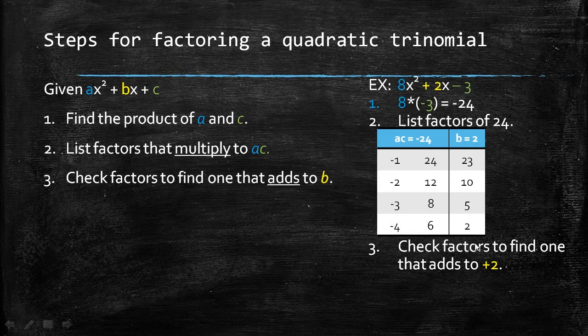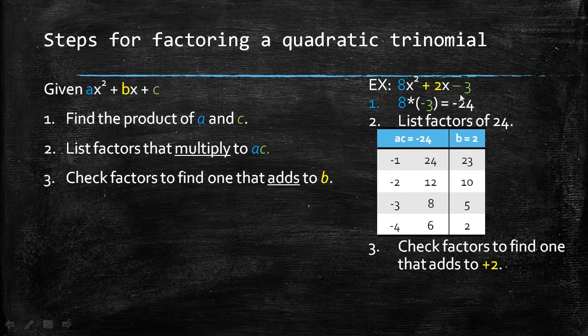So the two factors that I am going to choose for this quadratic expression is going to be negative 4 and positive 6.